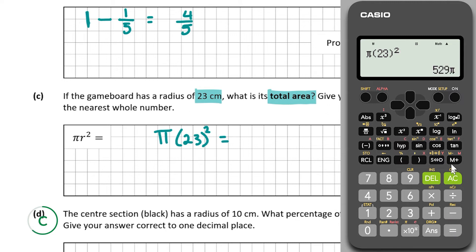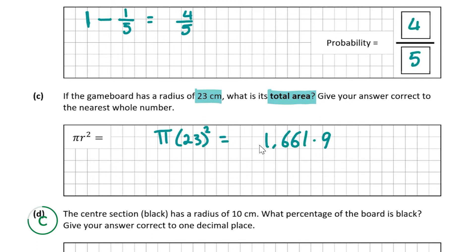The result is 1661.9 centimeters squared. But it asks us to give our answer correct to the nearest whole number, so we're going to round it up to 1662 centimeters squared.